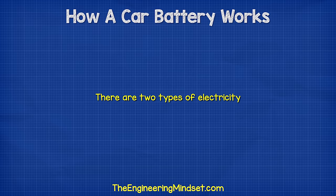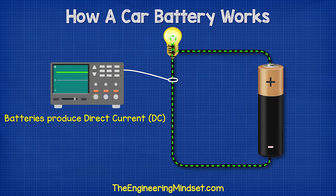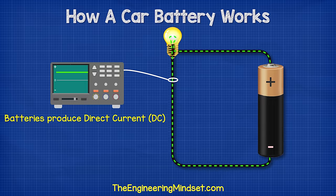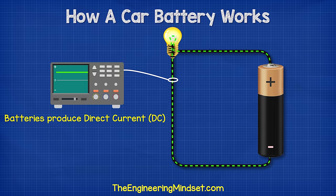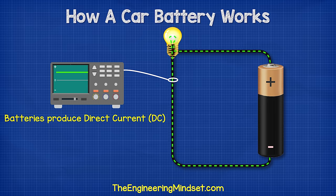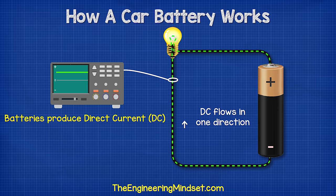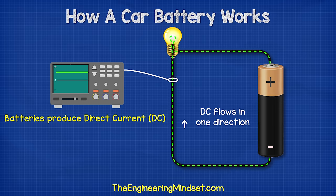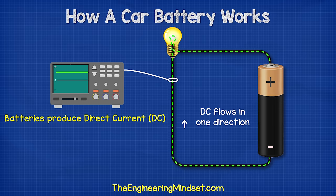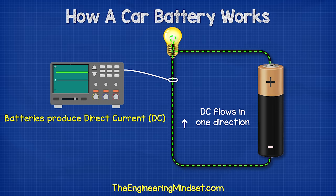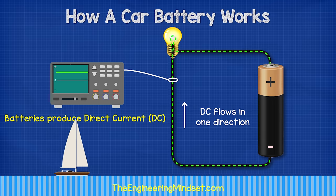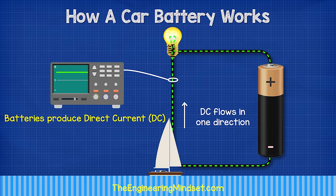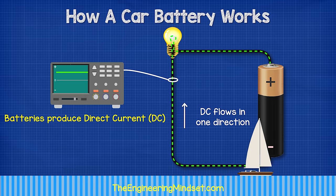There are two types of electricity. DC — direct current — which we get from batteries: the electrons in this type are pushed in one direction, so it's called direct current. Think of this like water flowing down a river.